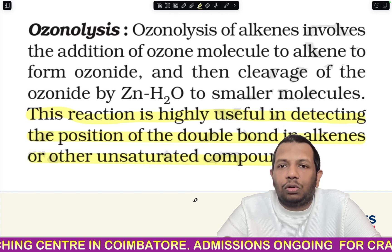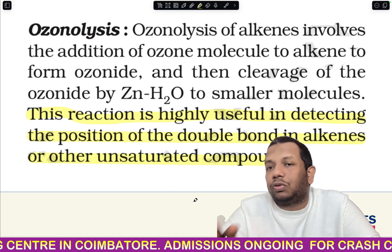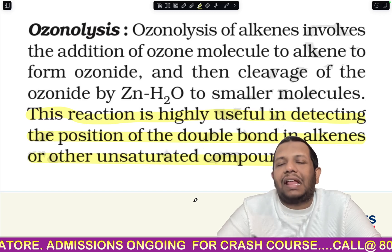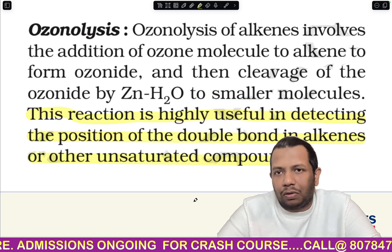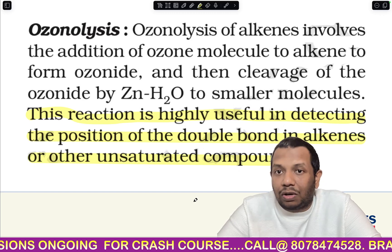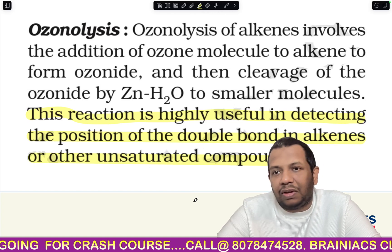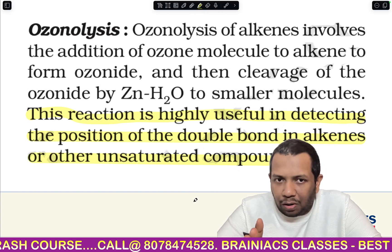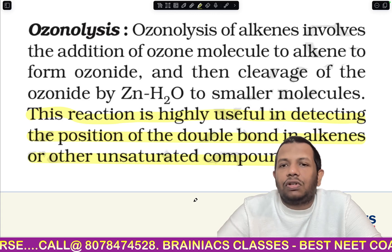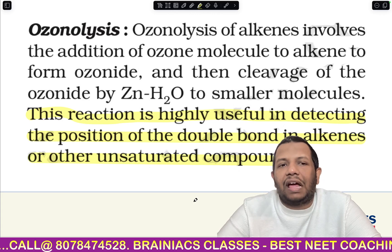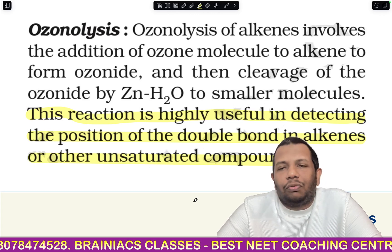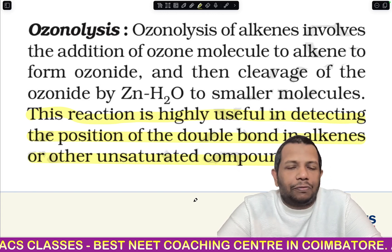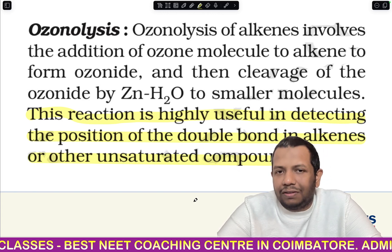In an exam, if they ask which technique is used to detect the position of the pi bond or double bond in an alkene, the answer is ozonolysis. For testing unsaturation, there is the bromine water test and other tests, but if you want to clearly find out the position of the double bond in an alkene, you need to go for ozonolysis.